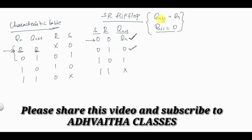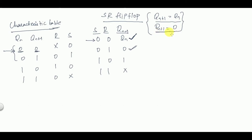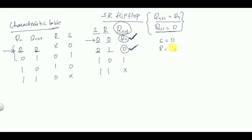These two cases — QN+1=QN and QN+1=0 — show that S is not changing across them, so S is constant, equal to 0. But R is changing from 0 to 1. When a value changes from 0 to 1, we call that indeterminate or don't care. So S=0 and R=don't care, which is exactly what we have written in the characteristic table.